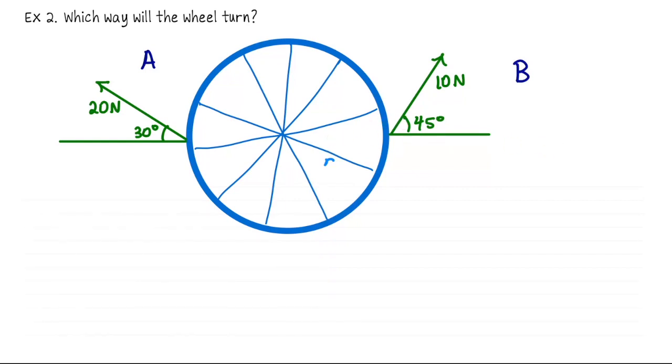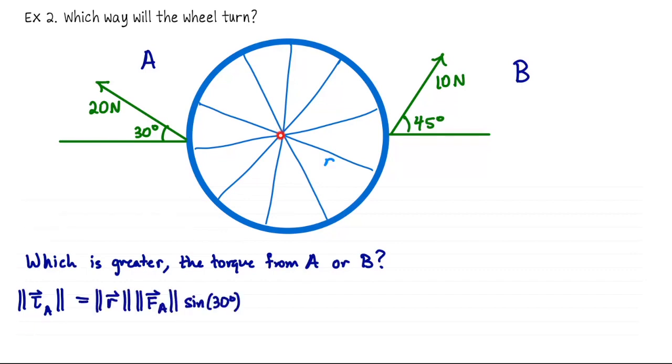Which way is this wheel going to turn? We can rephrase that question as which is greater, the torque from A or the torque from B? Whichever one has the greater turning effect is going to win. So we're just going to compute the magnitude of these torques at A. We're pivoting around the center of this wheel, so it's the length of the position from that pivot out to where the force is being applied. So it's the length of R times the magnitude of the force times sine of 30 degrees.